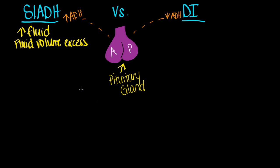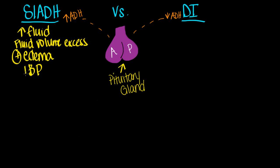Let me list out the signs and symptoms you're going to see in the patient with SIADH. You have too much fluid on board — fluid volume excess. Someone with fluid volume excess, what are you going to see? Edema. And what about their blood pressure? It's going to increase. They're going to have high blood pressure in relation to the fact that they have a lot of fluid on board.